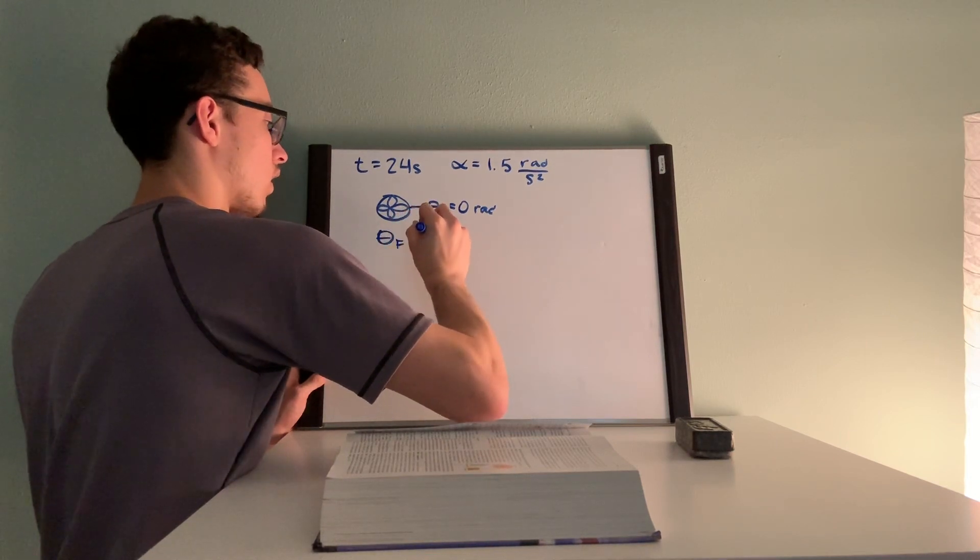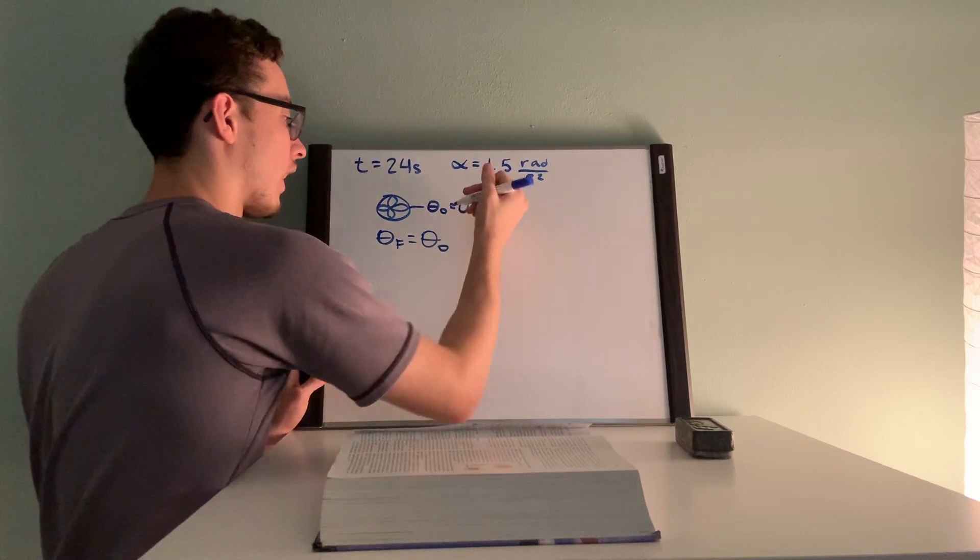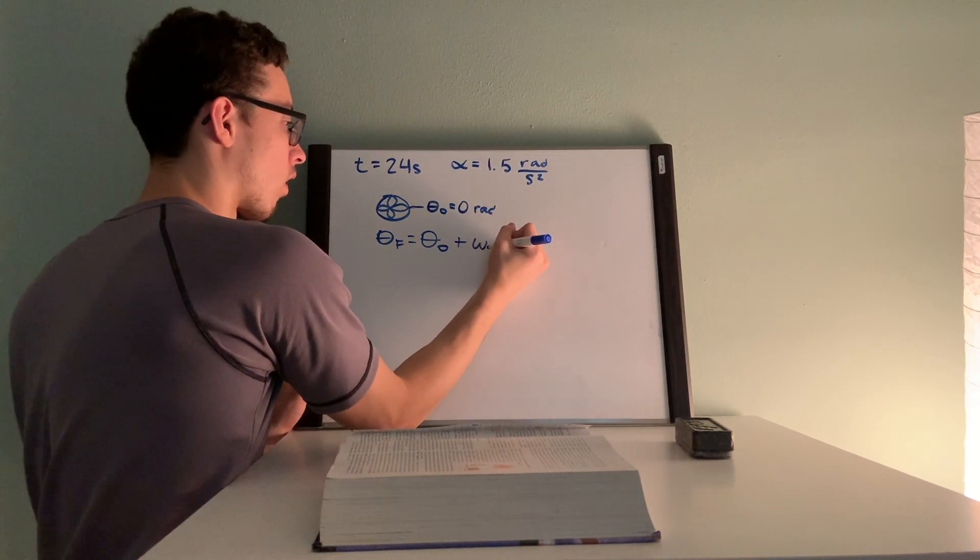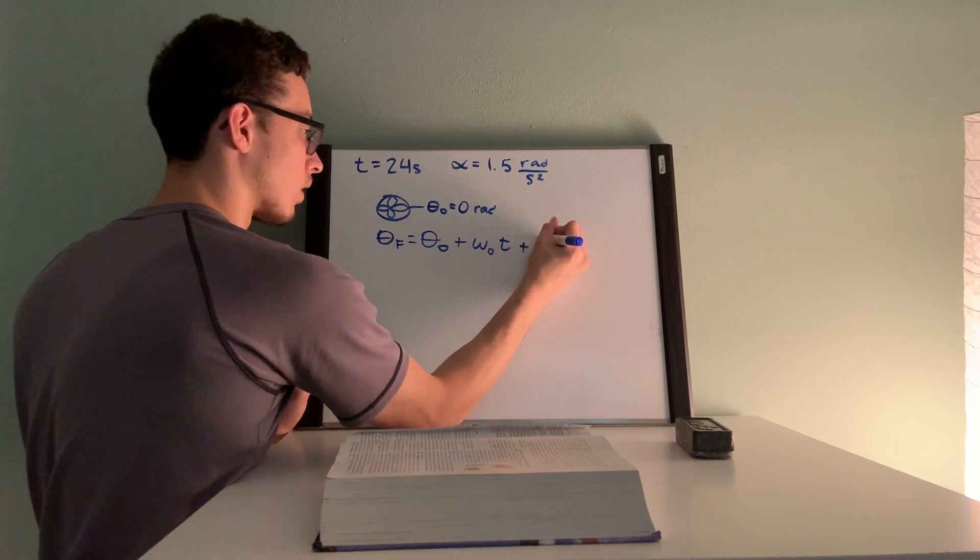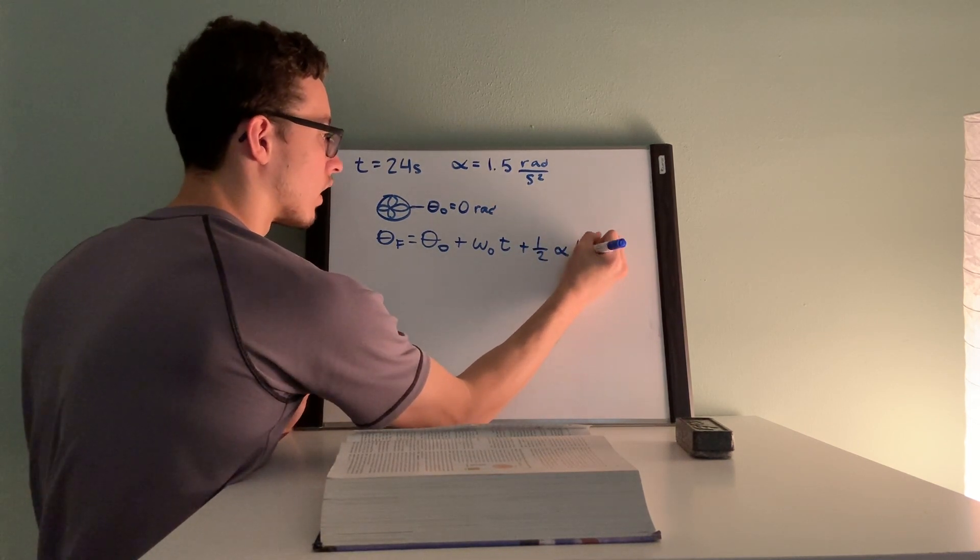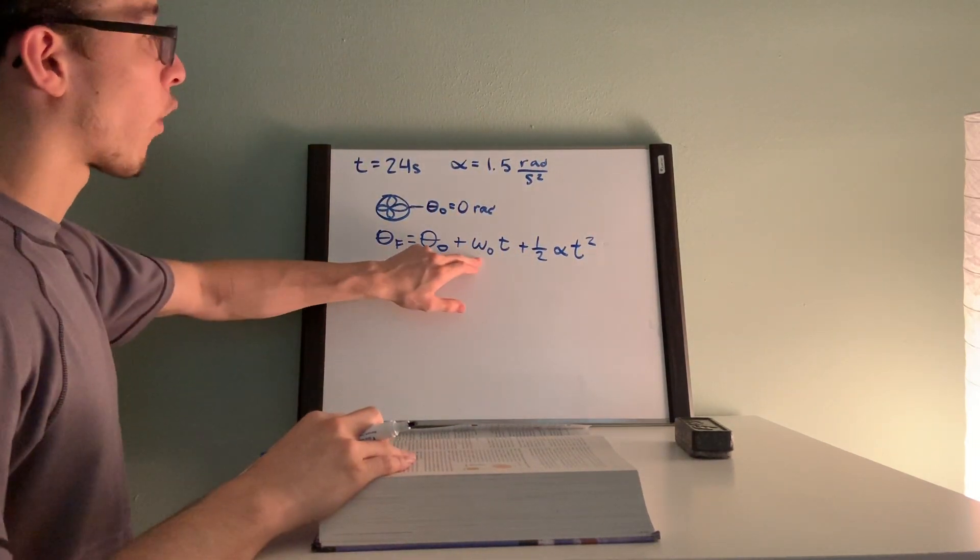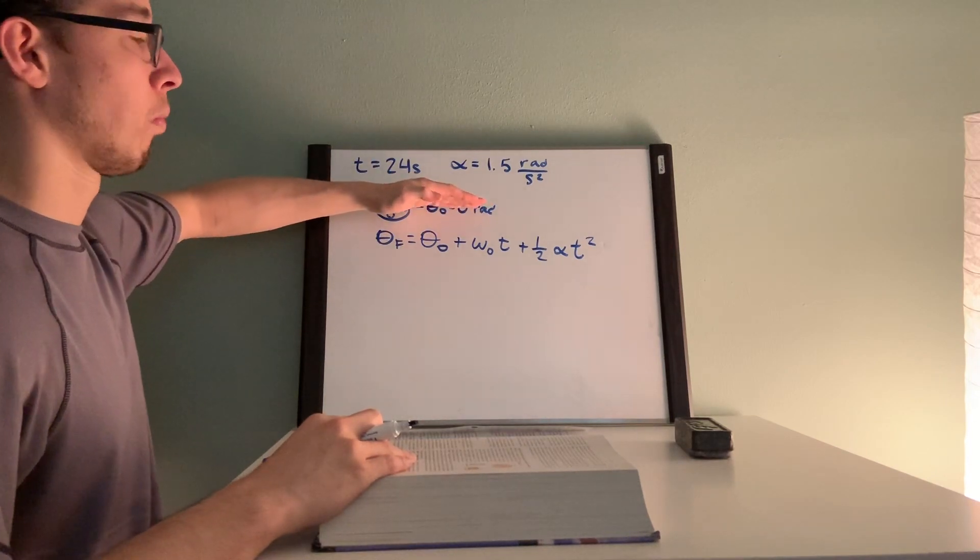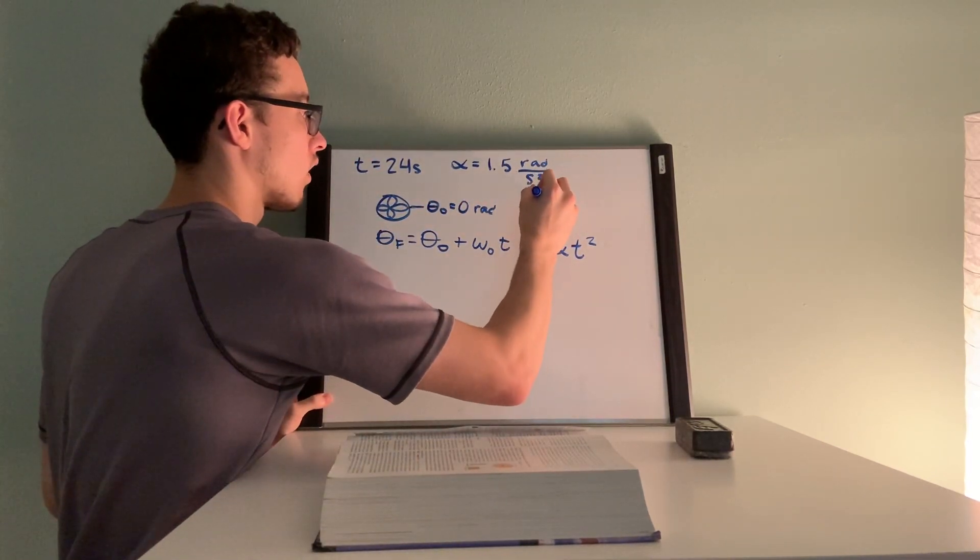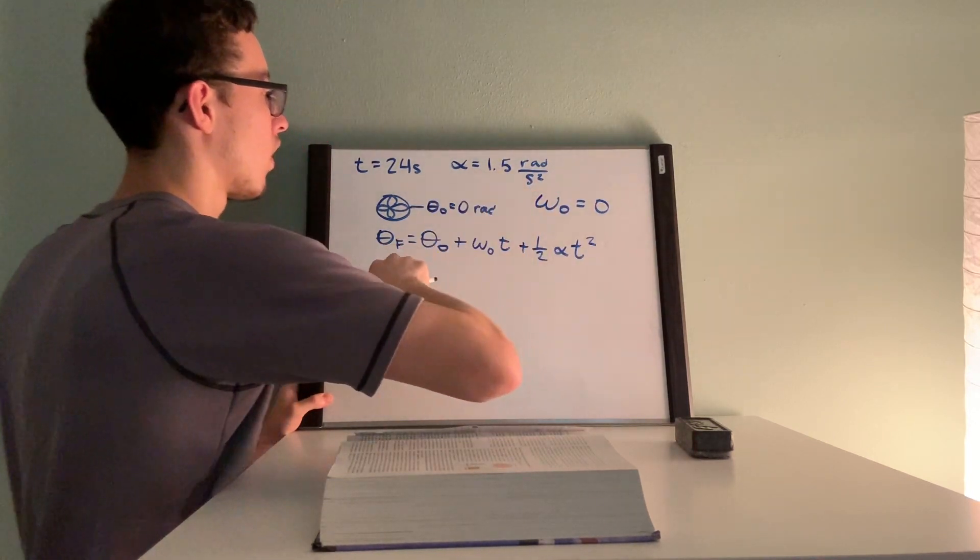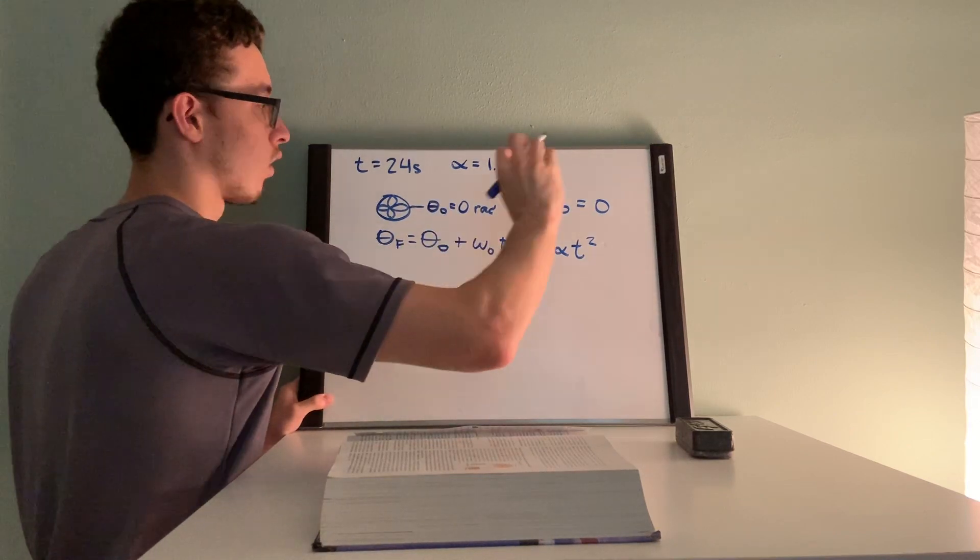So to solve for our final angle we use the kinematic equation. Our final angle is equal to our initial angle plus our initial velocity times time plus one half times acceleration times time squared. Now we start at rest because we're not moving before the blender is turned on, so our initial velocity is zero.